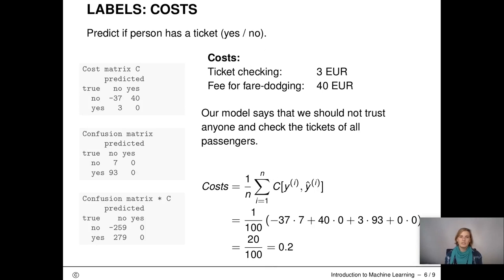To set up the cost matrix, let's first look at the wrong decisions. If we predict that the passenger has a ticket, but actually does not have one, we lose 40 euros. So the top right entry is 40. Now the correct prediction that someone has a ticket does not cost anything, but also does not give us any additional income beyond the ticket. The correct prediction that someone has no ticket will give us some money. We get 40 euros and pay only 3 euros.